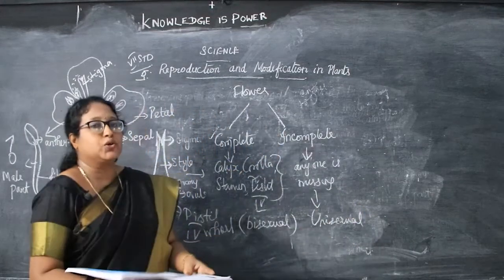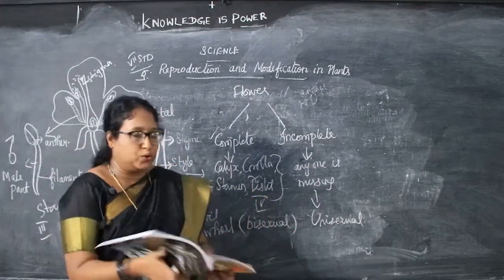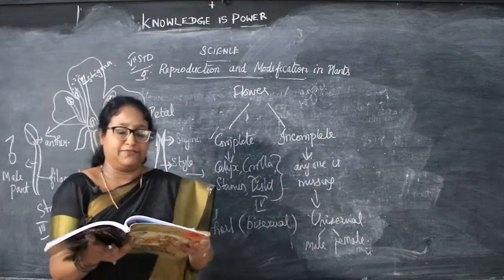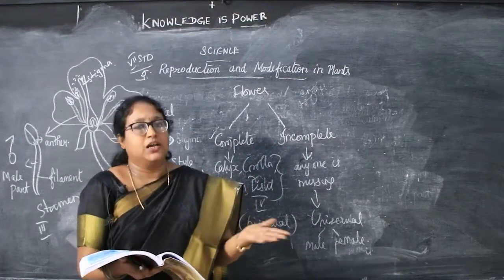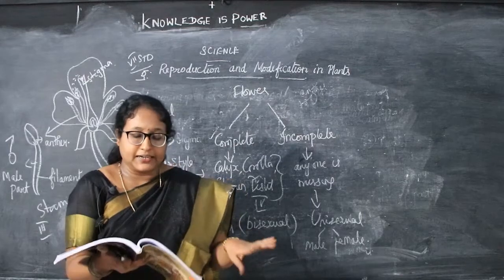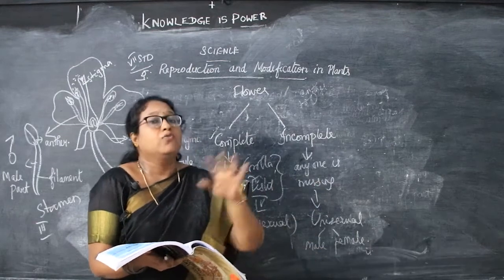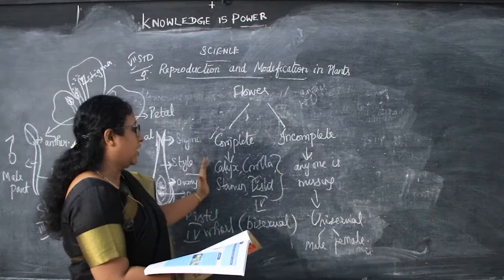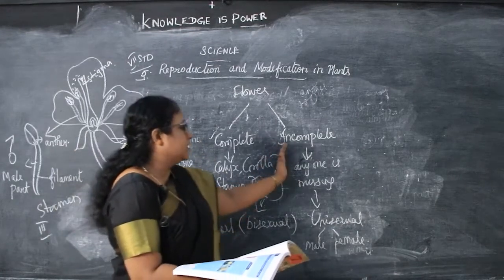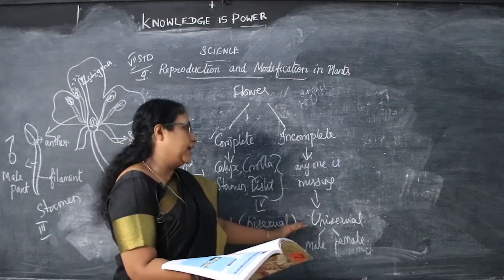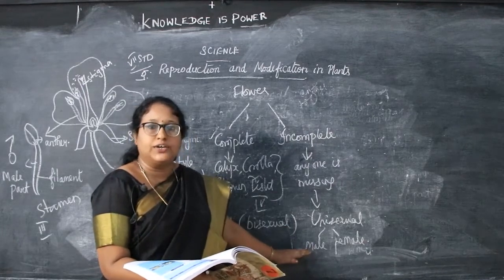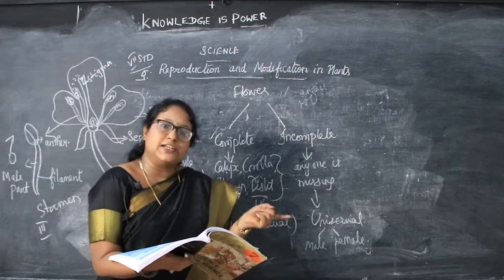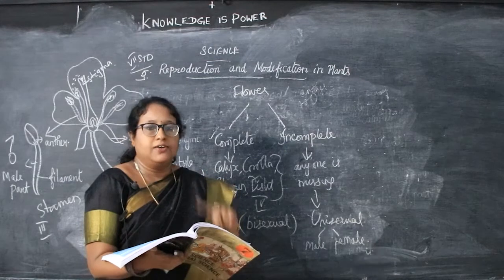Unisexual flowers are of two types: male and female flowers. The flower with androecium but without gynoecium is called a male flower. If gynoecium is present without androecium, it is called a female flower. So complete means all four whorls present — bisexual; incomplete means one whorl is missing — unisexual, either male or female.